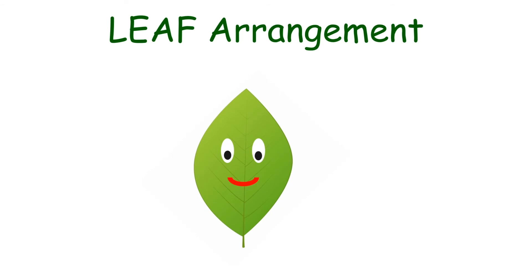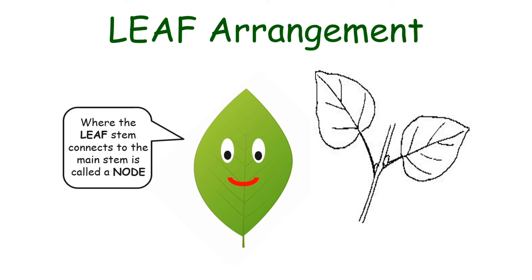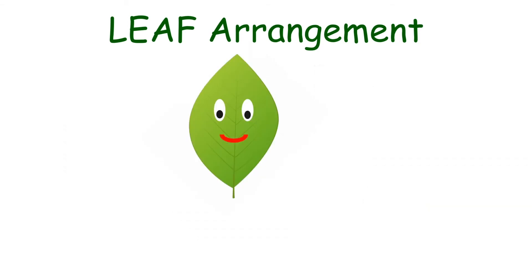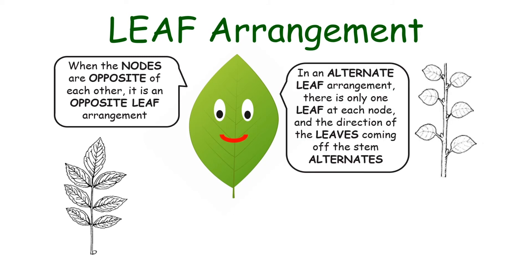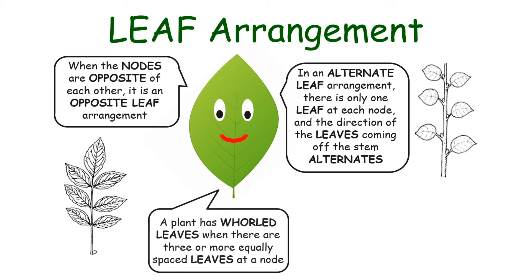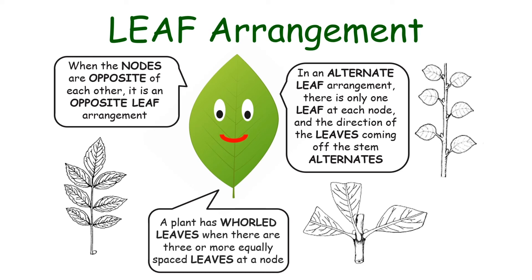Leaf arrangement. Where the leaf stem connects to the main stem is called a node. When the nodes are opposite each other, it is an opposite leaf arrangement. In an alternate leaf arrangement, there is only one leaf at each node and the direction of the leaves coming off the stem alternates. A plant has whorled leaves when there are three or more equally spaced leaves at a node.